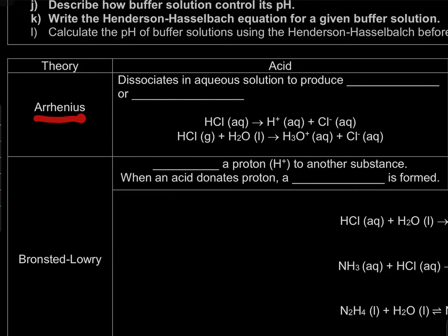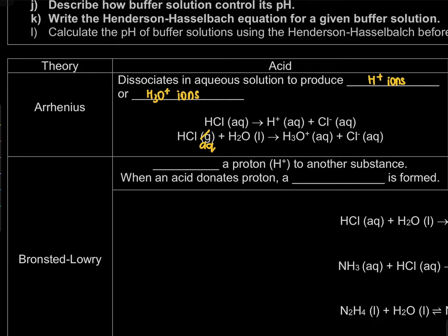The Arrhenius theory says that an acid is a species that dissociates in aqueous solution to produce H⁺ ions or H₃O⁺ ions. As we can see, HCl will dissociate to form H⁺ and Cl⁻. Or, the same HCl dissociates in water to form H₃O⁺ and Cl⁻. The difference is: H⁺ is produced when acid dissociates by itself, while H₃O⁺ is formed when we add water. That's why the definition accepts both H⁺ and H₃O⁺.